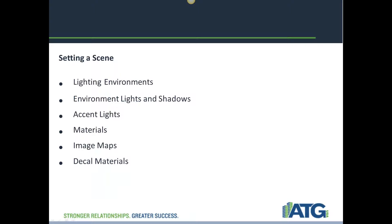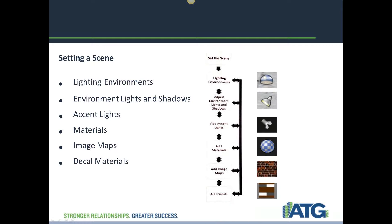For setting a scene in Showcase, you have lighting environments, lights and shadows, accent lights, materials, image maps, and decal materials. The Autodesk Showcase software enables you to add an environment and visually enhance a scene. The environment adds a background and associated lights and shadows to improve the realism of the model. The background of the environment is a high dynamic range image, or HDR image, which is a shape that completely surrounds the model.